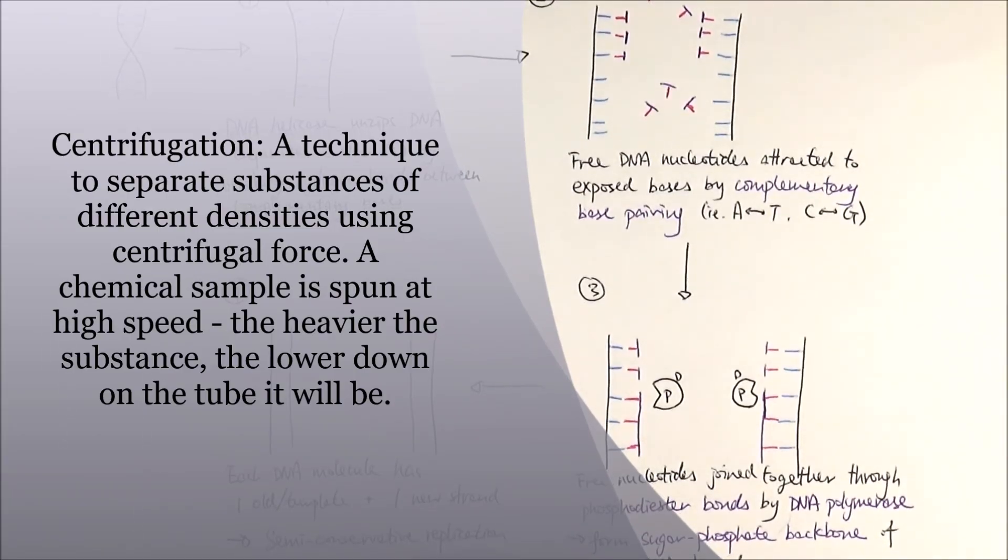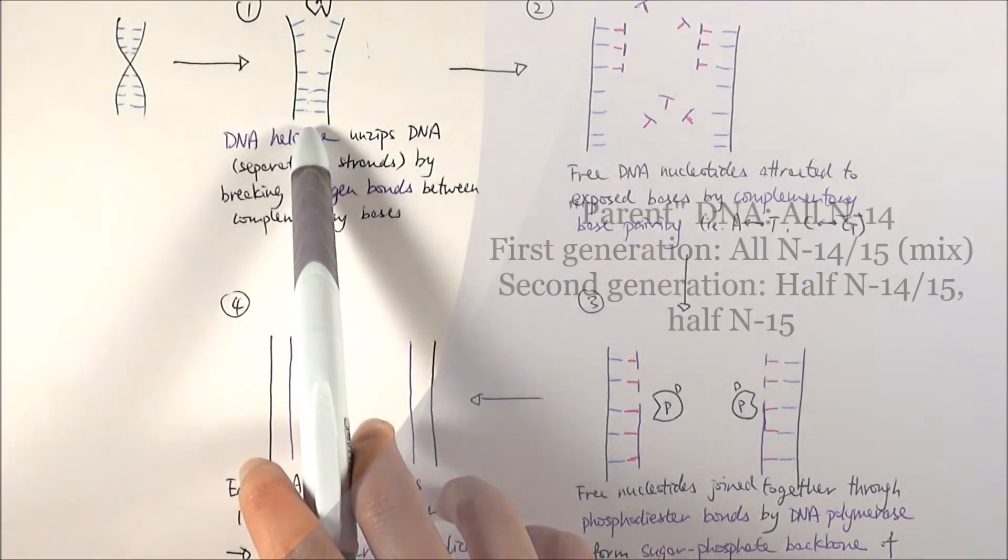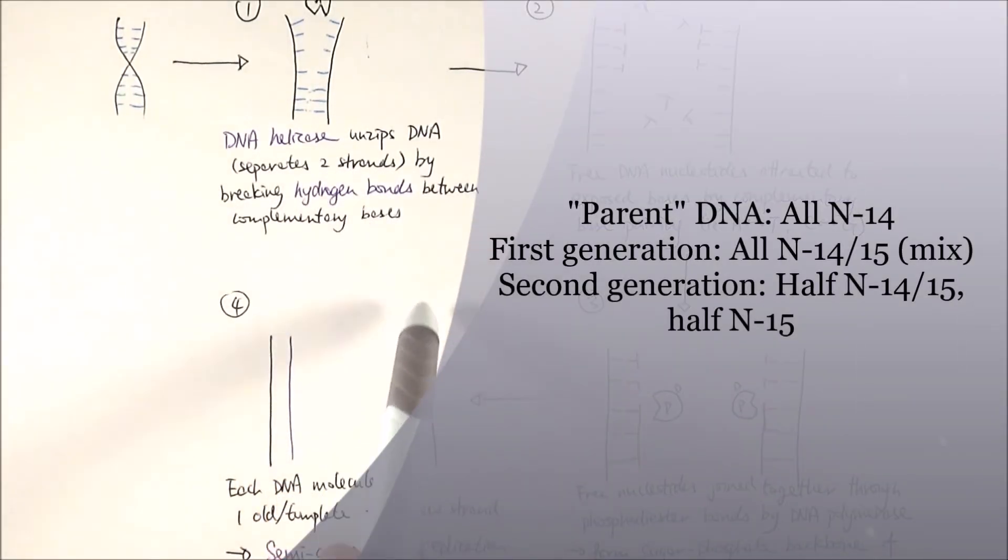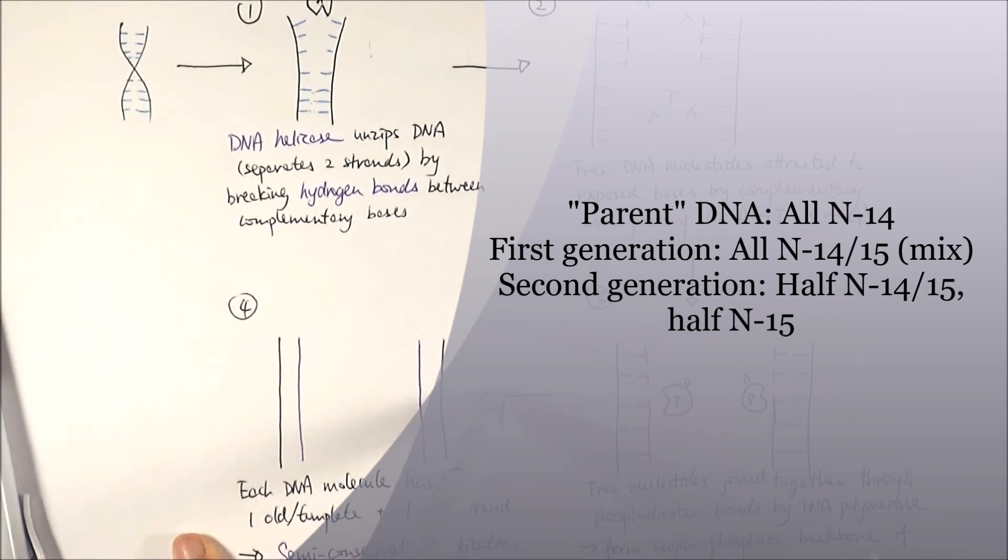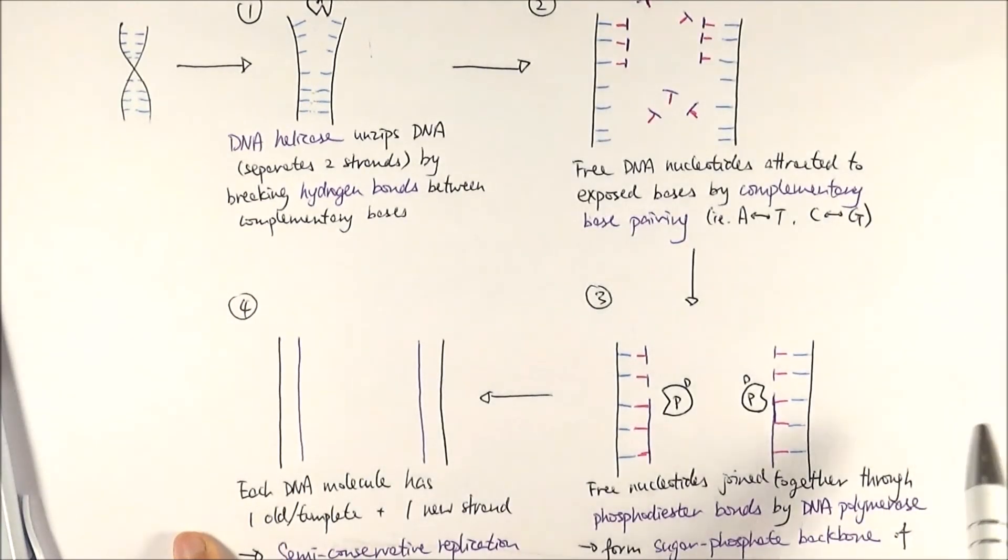Initially, all molecules were N-14. After the first replication cycle, everything had a mix of N-14 and N-15. In the second generation, they found a mix of N-14 and N-15, plus another band of just N-15. This is classic evidence for semi-conservative replication.